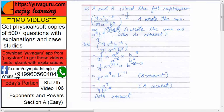A and B solve the following expression. A wrote the answer as A raised to 9 upon 9B raised to 11. B wrote the answer as A raised to 9 into B raised to minus 11 upon 9. Who is correct? So let us solve this first. The expression is only this much.